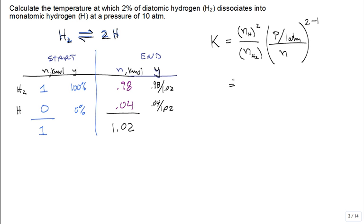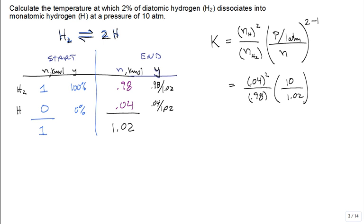I know everything on the right-hand side, so I plug it all in to get K. Plugging in: (0.04)² divided by 0.98, times 10 divided by 1.02, raised to the power 1. Running that on the calculator gives K ≈ 0.016.